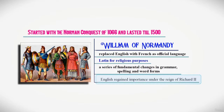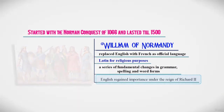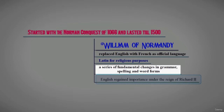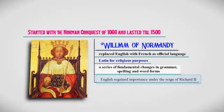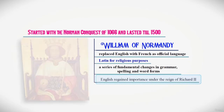All the ministers in the council of King William were French except Wolfenstein. The English language went through a series of fundamental changes in terms of grammar, spelling, and word forms during the Middle English period. The English language regained importance under the reign of Richard II.